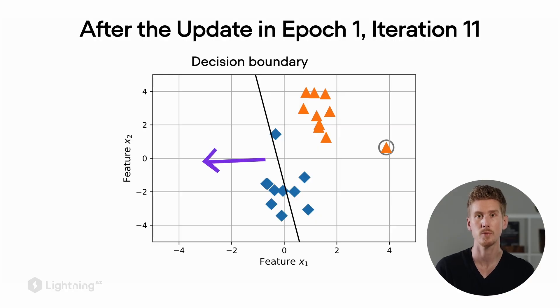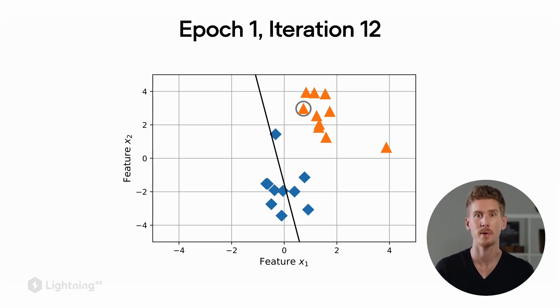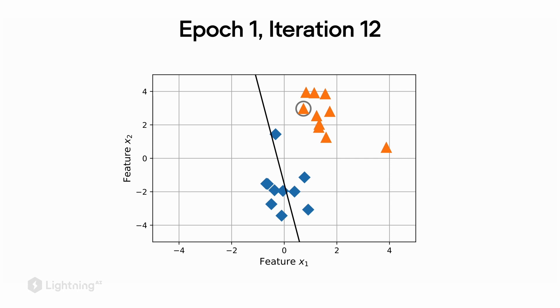We can now also construct the so-called decision boundary. Everything on the left-hand side of this decision boundary will be predicted as a blue diamond, and everything on the right-hand side will be predicted as an orange triangle. If you are curious how we constructed this decision boundary, we will cover this in an optional bonus video. Continuing with iteration 12, since the 12th data point falls on the right-hand side of the decision boundary, we also make a correct prediction. Using the decision boundary visually, we can see that all remaining data points in this dataset are orange triangles that fall on the right-hand side, which means we are making correct predictions throughout.